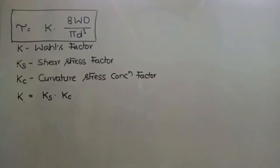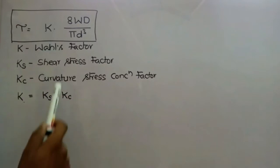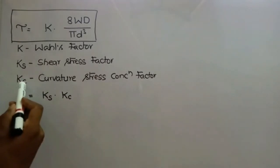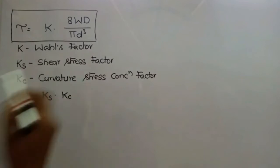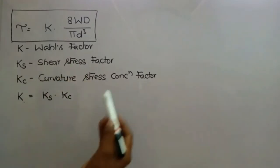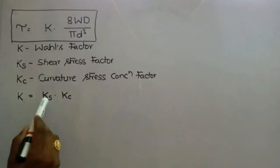Good morning. We'll move on to the next topic: deflection of helical spring. The shear stress tau is equal to k times 8WD divided by πd³, where k is the Wahl's factor. This factor is considered to account for the effects of shear stress due to twisting, direct compressive stress, and shear stress due to the curvature of the helical spring.